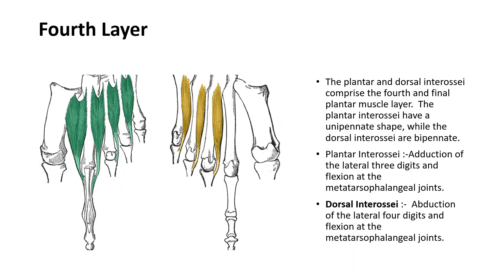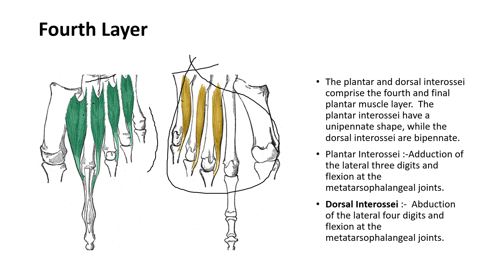The fourth and final layer of intrinsic muscles of the foot contains the dorsal and plantar interossei. The dorsal interossei are bipennate with two heads, while the plantar interossei are unipennate with one head and comprise three muscles. The plantar interossei cause adduction of the lateral three digits and flexion at the metatarsophalangeal joints. The dorsal interossei cause abduction of the lateral four digits and flexion at the metatarsophalangeal joints.